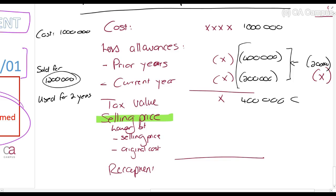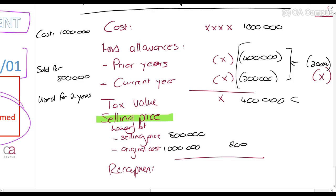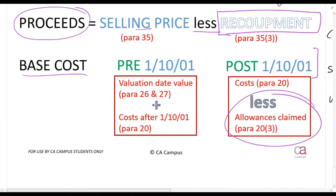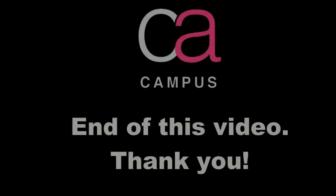If instead you sold the machine for 800,000 rands: selling price is 800,000, original cost is 1 million, so the lower of the two is 800,000. Eight hundred thousand minus the tax value of 400,000 gives a recoupment of 400,000 rands. Total past allowances were 600,000, but we only recover 400,000 — because original cost was 1 million and we only recovered 800,000. SARS therefore does not recover its full allowances that were granted.